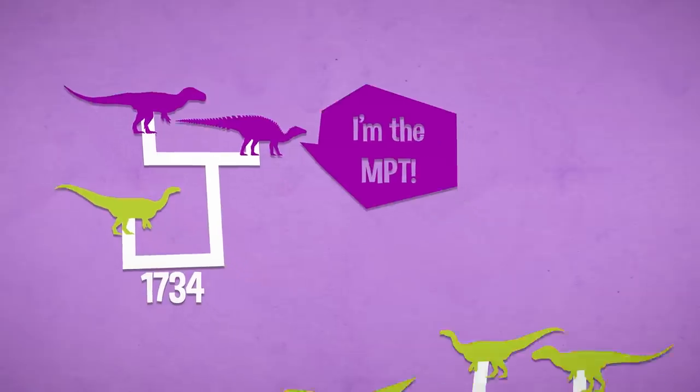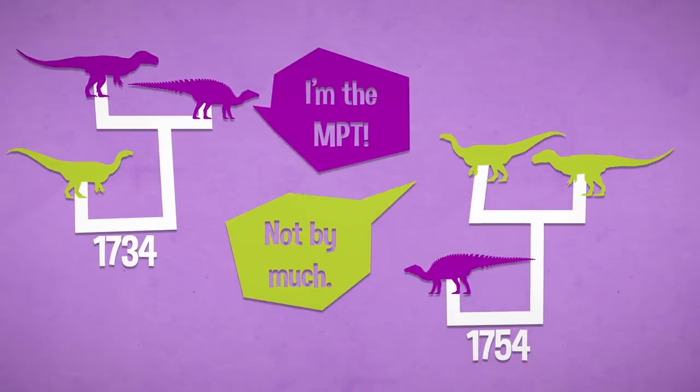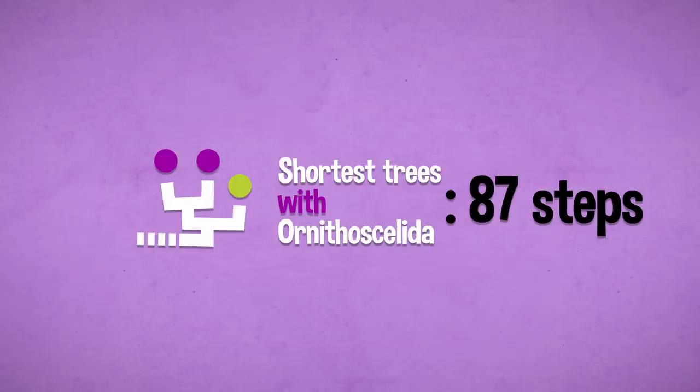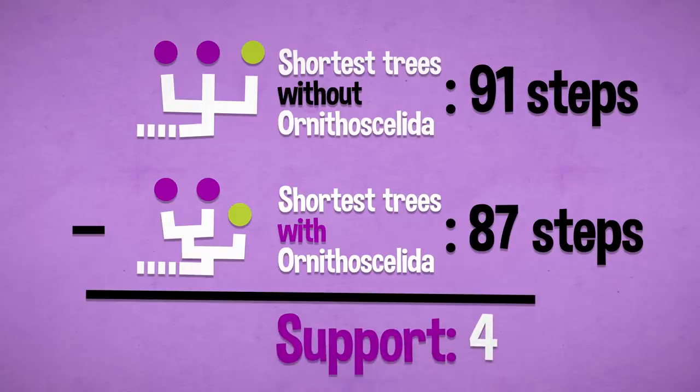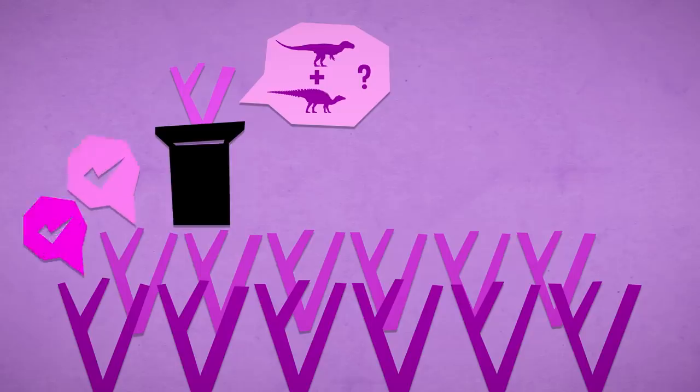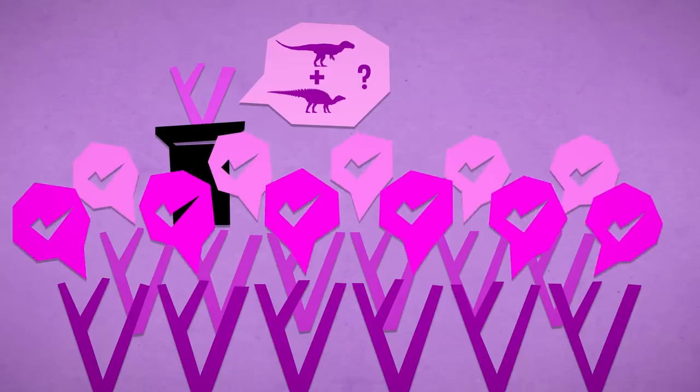Support is an answer to the question, how sure are we that these relationships are real and not a statistical anomaly? A clade's Bremer support value tells us how many extra steps we'd need to add to the tree for that clade to no longer be a parsimonious solution. Essentially, it looks at what the most parsimonious trees agree on.